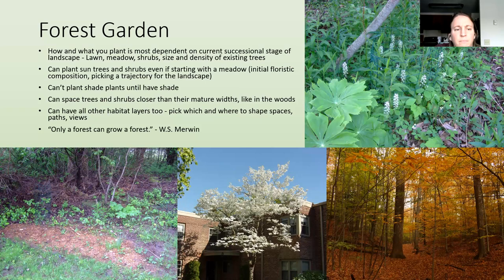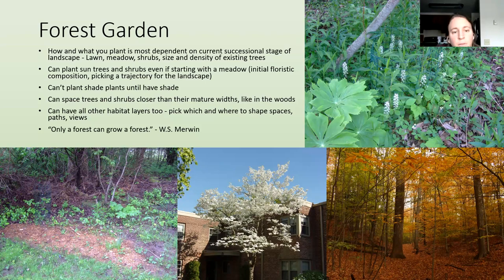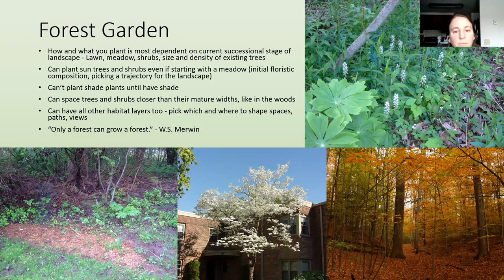You can place trees and shrubs closer than their mature width, similar to how they grow in the woods. For example, a sugar maple planted next to a flowering dogwood can be relatively close because the dogwood stays short — their roots and leaves won't be in the exact same place, so they'll be cooperating more than competing. In the forest garden you can have all the other habitat layers too: ground layer, perennials, shrubs, vines, and small trees. You're deciding which layers you want and where to shape spaces and paths.